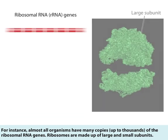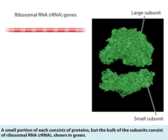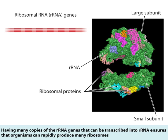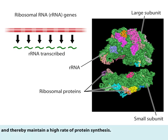Ribosomes are made up of large and small subunits. A small portion of each consists of proteins, but the bulk of the subunits consist of ribosomal RNA, shown in green. Having many copies of the ribosomal RNA genes that can be transcribed into ribosomal RNA ensures that organisms can rapidly produce many ribosomes, and thereby maintain a high rate of protein synthesis.